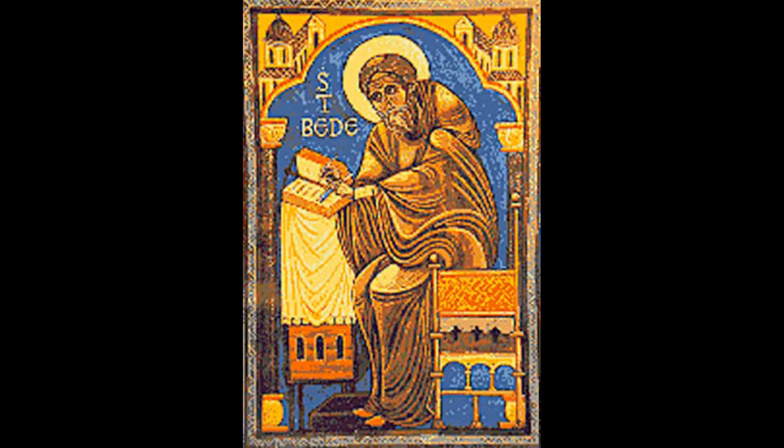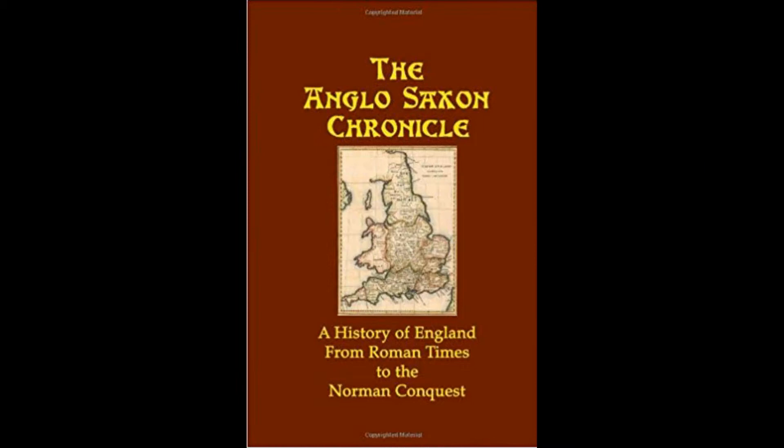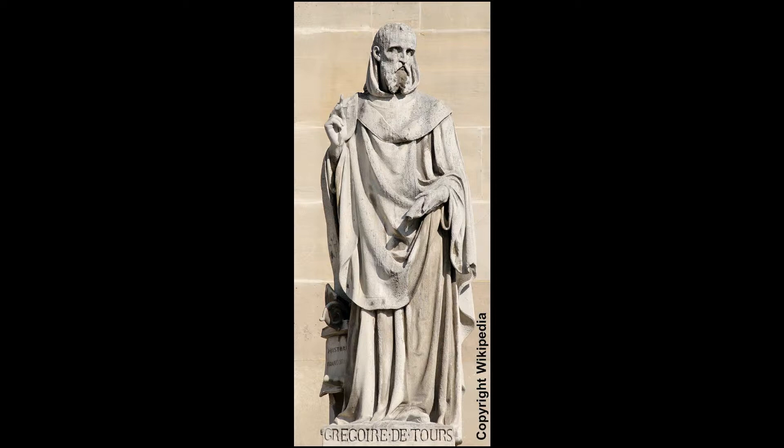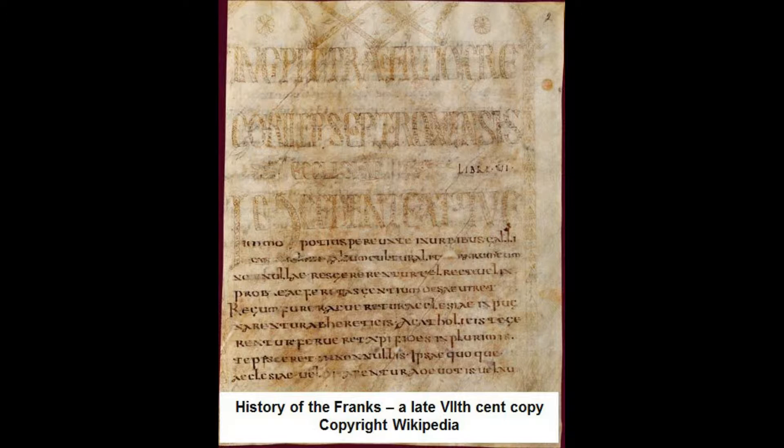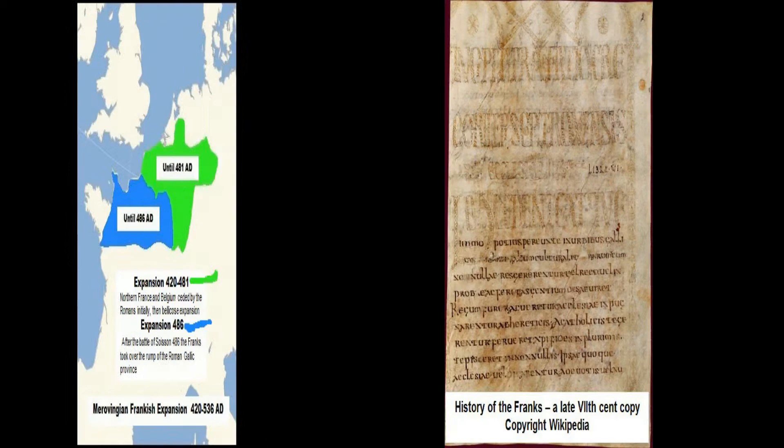In Britain we rely mainly and very heavily on only a very few historical sources for the Dark Age period of English history. These sources are Bede, Gildas and the Anglo-Saxon Chronicles. It has been suggested that some of the contents of Bede's history may have been cribbed from the Frankish history Historia Francorum, written in the late 6th century AD by the later beatified Gregory of Tours.